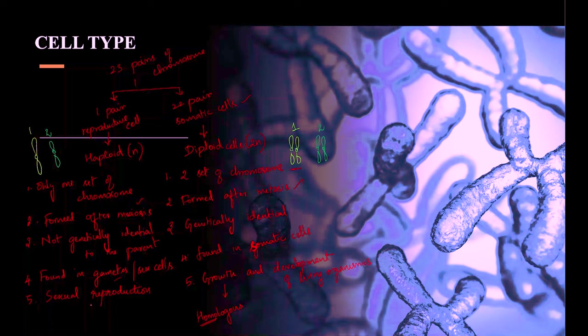Haploid cells are also called non-homologous or heterologous.